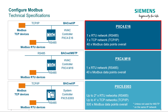PXC4-E16: The Ethernet version supports both RTU and TCP/IP Modbus devices. The RTU devices can be connected via the RS-485 connector onboard, whereas for TCP/IP devices, one of the Ethernet switches can be used. The total number of Modbus data points supported is 40.